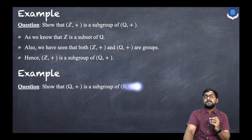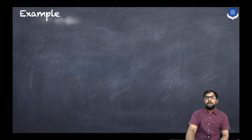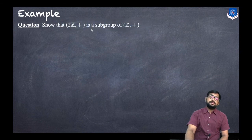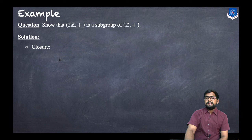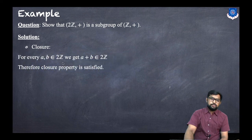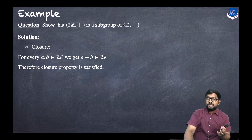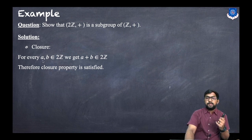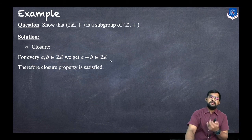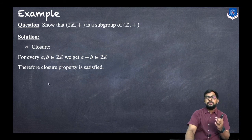Now let us discuss another example: show that 2Z+ is a subgroup of Z+. First, we know that 2Z is a subset of Z. Now we check that 2Z+ is a group. For the closure property: for every A, B belonging to 2Z, we get A + B belonging to 2Z. For example, 2 + 4 = 6, which also belongs to 2Z. Therefore the closure property is satisfied.